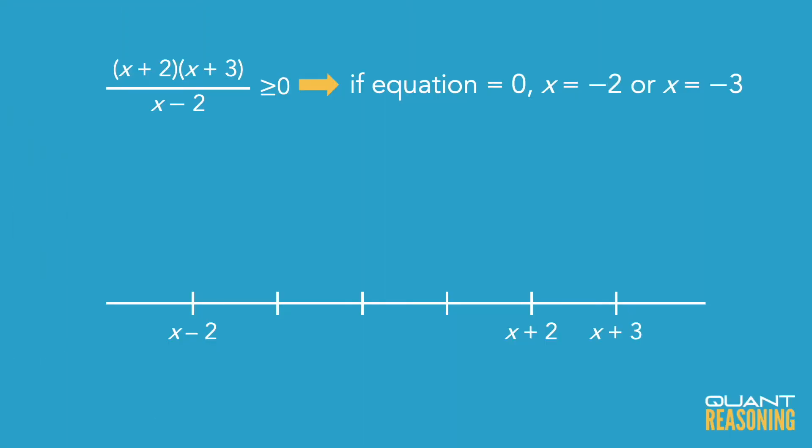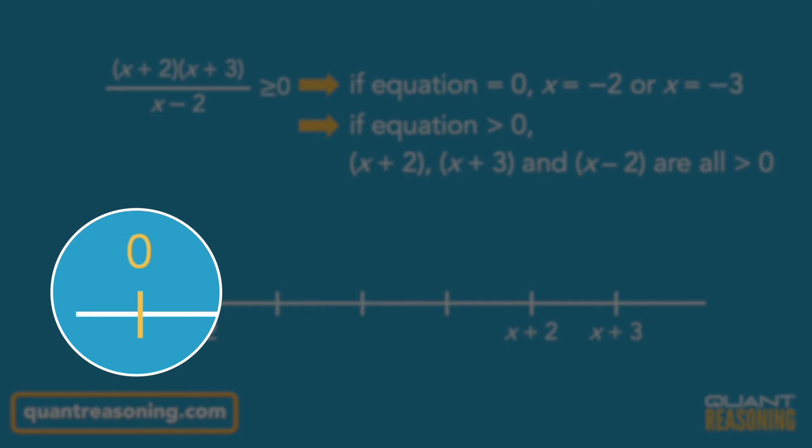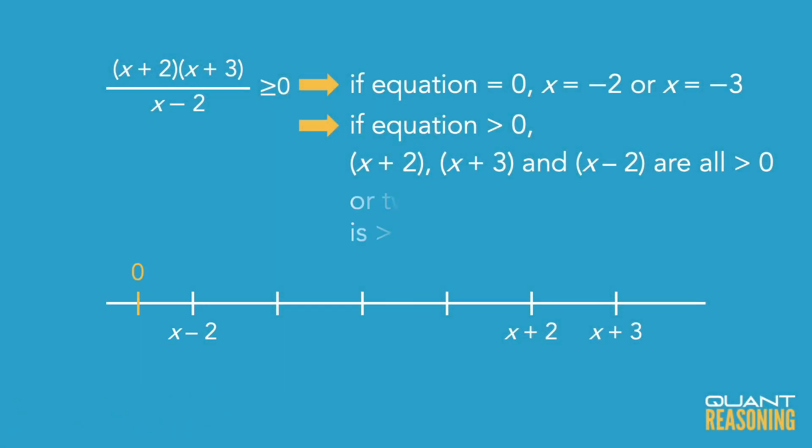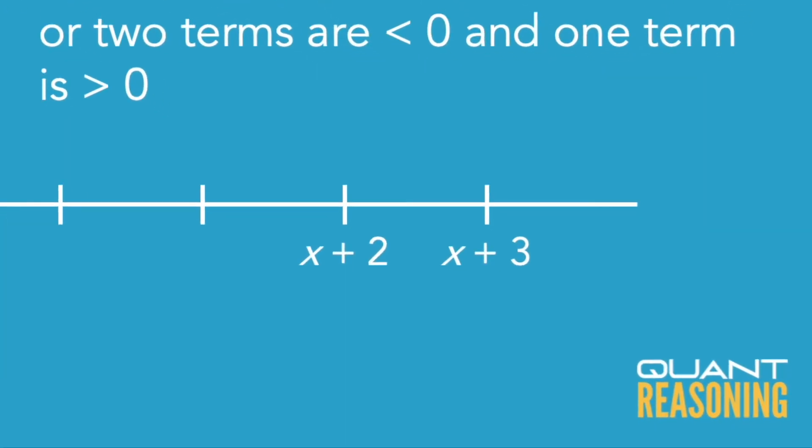Under what circumstances would this ratio be positive? That would happen if all three factors are positive. So x minus 2 is positive, x plus 2 is positive, and x plus 3 is positive. In other words, going back to our number line, we'd put zero somewhere to the left of x minus 2. And the other scenario we'd have to think about is where two of the factors are negative and one is positive. That's the only other way that you'd get a positive ratio overall.